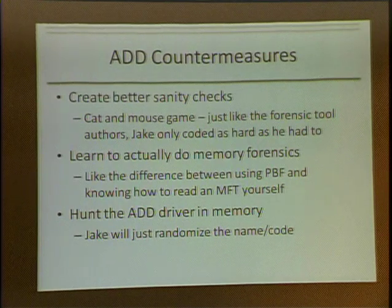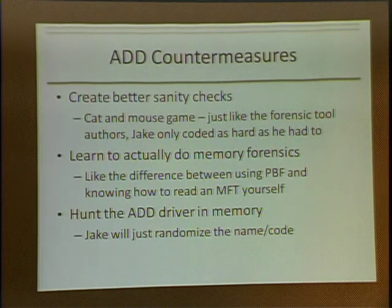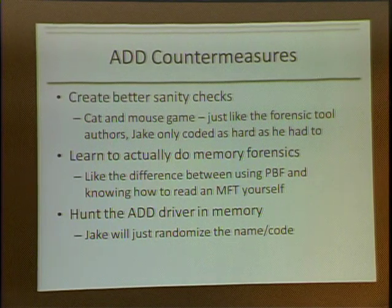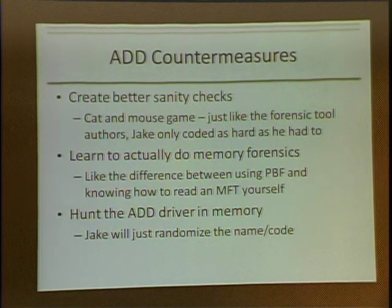As far as countermeasures — my boss said he would prefer it if I didn't release something unless I have a solution to the problem. So: create better sanity checks. But that's a cat and mouse game. You create a better sanity check, I'll reverse engineer it, and I'll just code harder — just like the forensic tool authors only coded as hard as they had to to prevent false positives. Now I'm creating false positives. I feel like at the end of the day this is a cat and mouse game that I get to win.